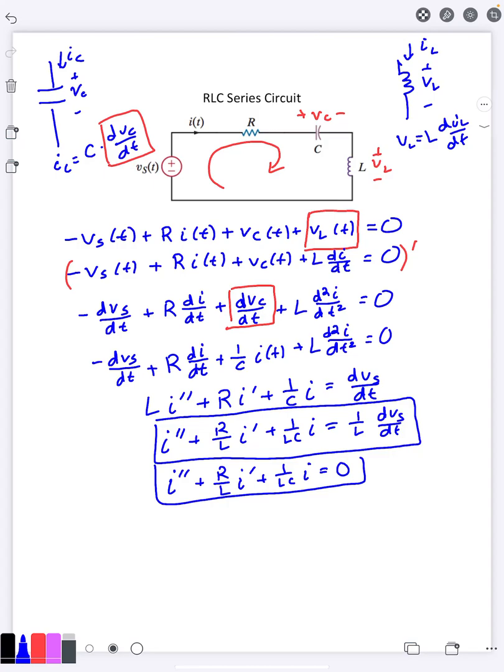Now I mentioned earlier that sometimes they will ask you for something other than the current through these. Maybe they ask you for the voltage, for example. Well if they ask you for the voltage across the resistor, you can just multiply by R, that would get you the voltage there.